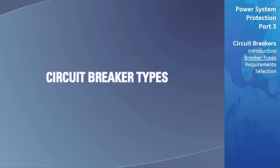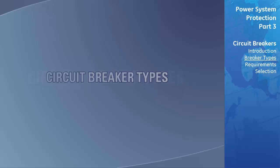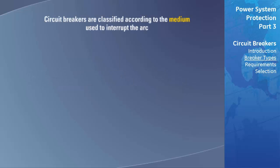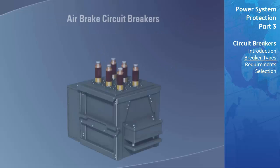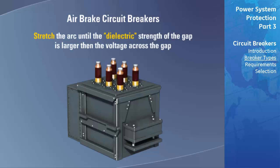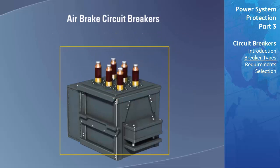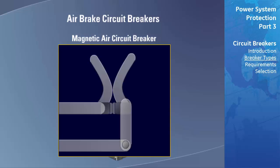Circuit breakers are classified according to the medium used to interrupt the arc. The mediums are air, oil, sulfur hexafluoride (SF6), and vacuum. Air brake circuit breakers extinguish the arc by stretching it until the dielectric strength of the gap is larger than the voltage across the gap. There are various methods employed by different types of air brake circuit breakers to increase their effectiveness.